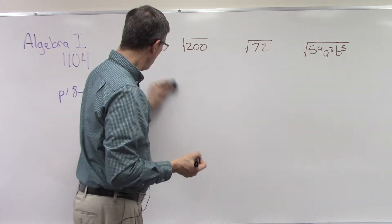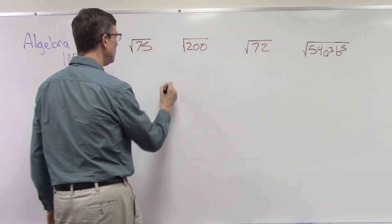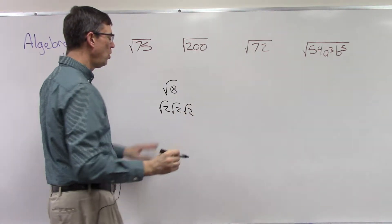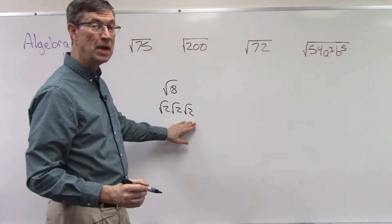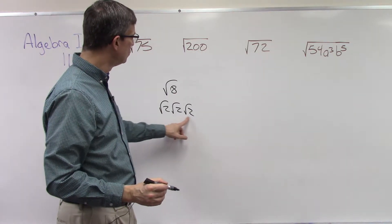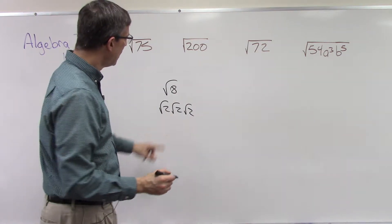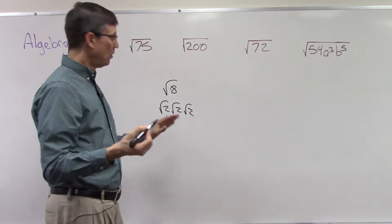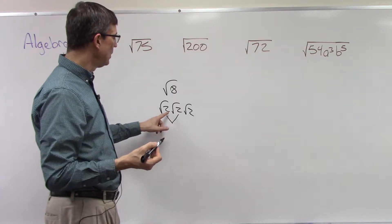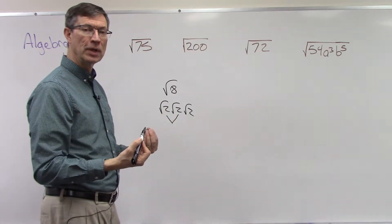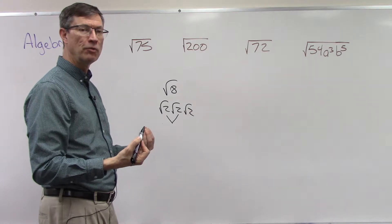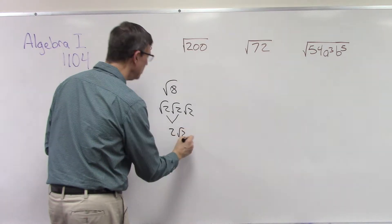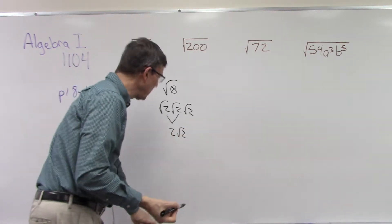If we take something like the square root of 8, I encourage students to write it as all the prime numbers that make up that number. So 8 is 2 times 2 times 2. As soon as you do that, you see that you have two of the same — any time you have two radical terms that are the same, the number underneath pops out. I call it 'popping out' — you won't find that in any algebra book, that's a Mr. Anger term. So the 2 pops out, and the answer is 2 times the square root of 2.